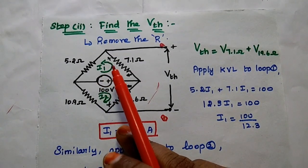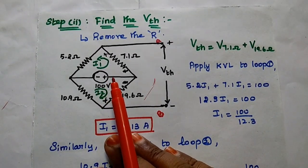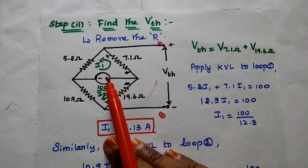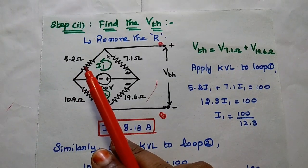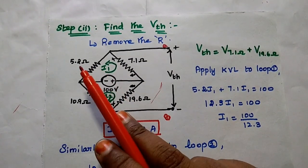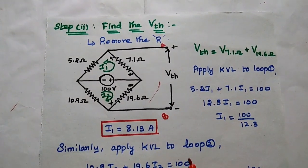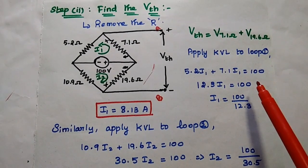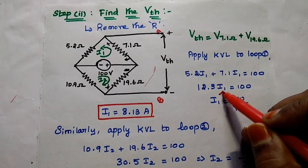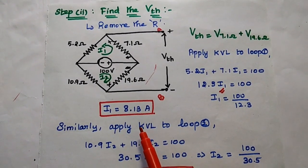Applying Kirchhoff's voltage law to loop 1: KVL states that the algebraic sum of voltage drops equals the algebraic sum of voltage rises in the closed path. The voltage rise is the source value 100 V and voltage drops are R times I1. So 5.2·I1 plus 7.1·I1 equals 100. This simplifies to 12.3·I1 equals 100, giving I1 equal to 8.13 amperes.